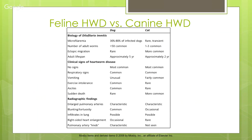Exercise intolerance is common in dogs but rare in cats; ascites is common in dogs but rare in cats; sudden death is rare in dogs but more common in cats. Radiographically we see enlarged pulmonary arteries, blunting and tortuosity (corkscrew appearance) of vessels common in dogs, and occasionally infiltrates in both species. Right-sided heart enlargement and the characteristic 'pulmonary artery knob' are seen in dogs but rarely in cats.